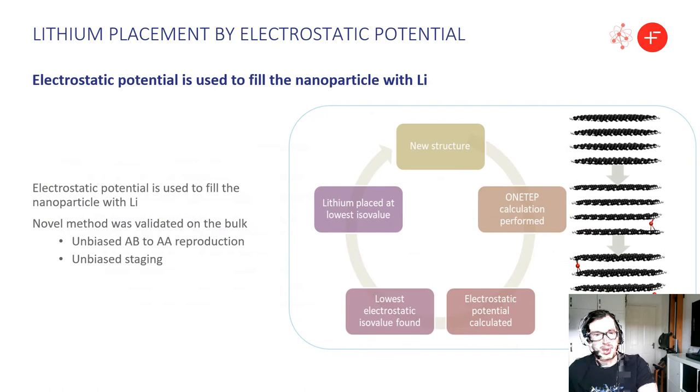Here I'm going to talk about the electrostatic potential method which we used to place lithium into the graphite nanoparticle itself. It works under the basic principle whereby we start with our structure. So let's look at the top right here in this graphic and we perform a ONETEP calculation on it. So at the beginning here we've got just a normal graphite nanoparticle. We perform a ONETEP calculation on this. This outputs the electrostatic potential and then we look for the global minimum of this electrostatic potential that we've formed on this nanoparticle and then place a lithium there.